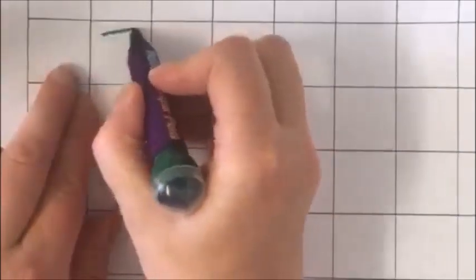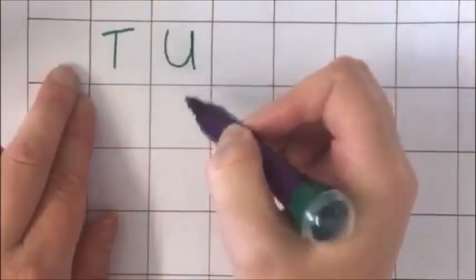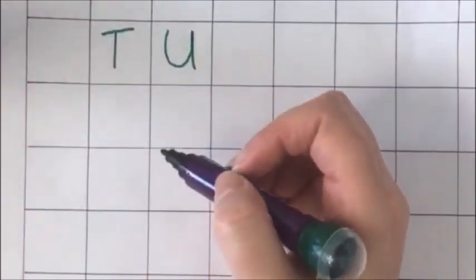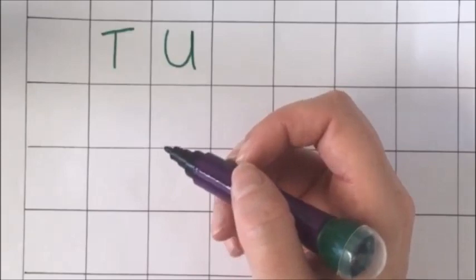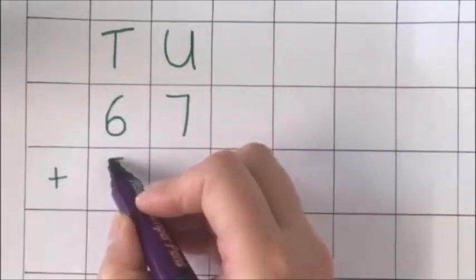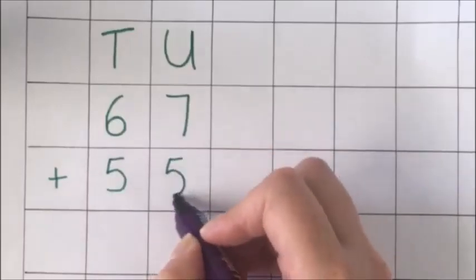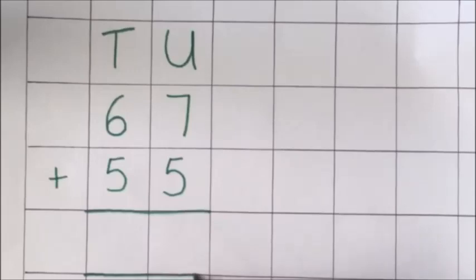First, I'm going to put my tens and units columns in because it's really important that I write the calculation correctly beneath there. The first calculation that I'm going to do is 67 add 55. I put some lines for a space for my answer.